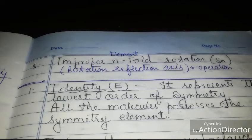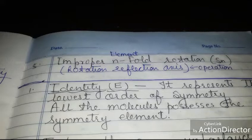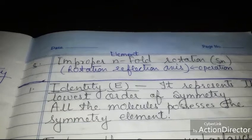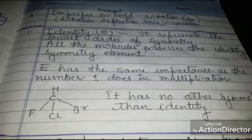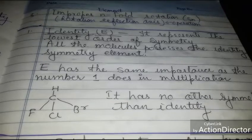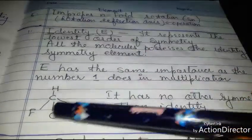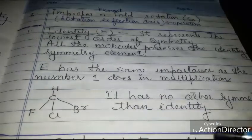First, let us consider identity, denoted by E. It is the lowest order of symmetry and almost all molecules possess this symmetry element E. E has the same importance in symmetry as the number 1 does in multiplication — you multiply by 1 and you get the same result. Consider a molecule in which all substituents are different: it will have no other symmetry, only the identity E.